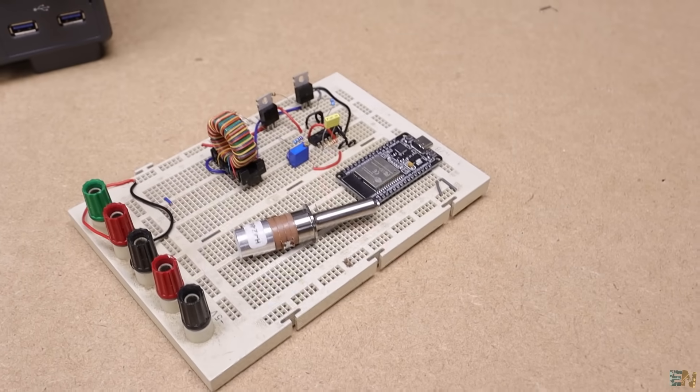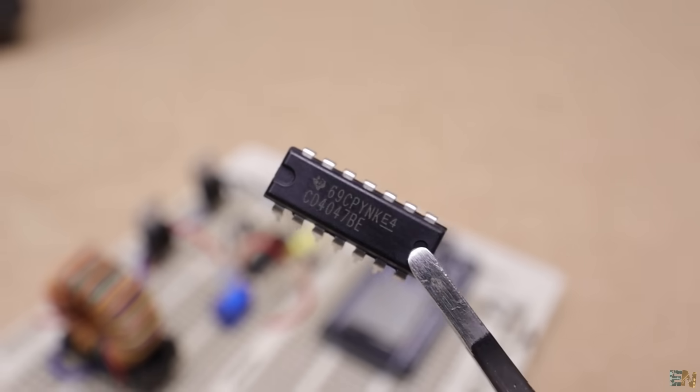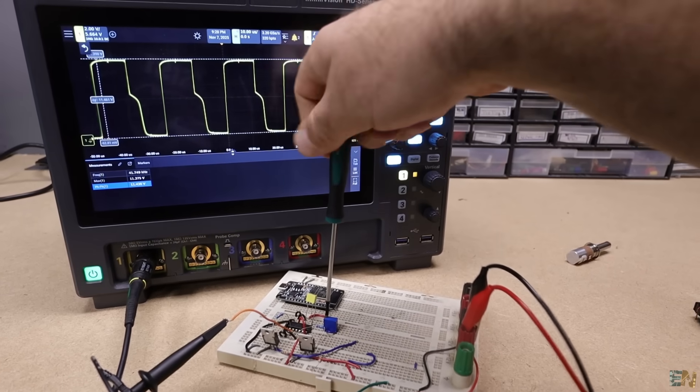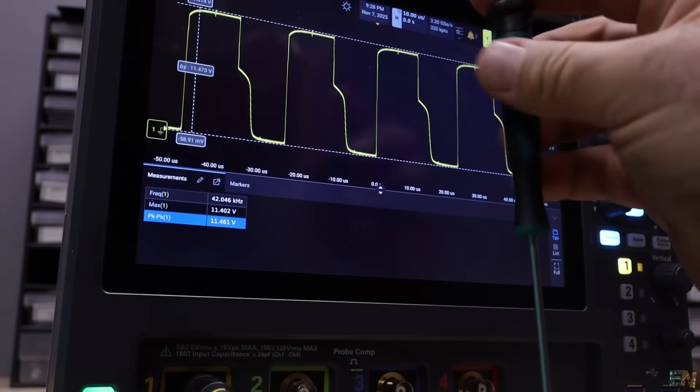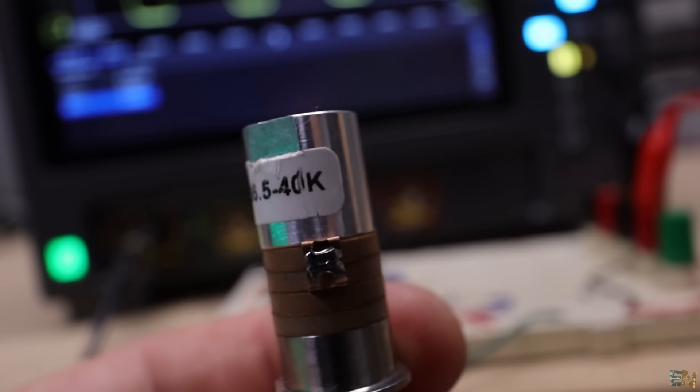But anyway, I've made a multivibrator circuit using the CD4047. Using this and a potentiometer we can adjust it to 40kHz as you can see on the scope. And that's the frequency where the piezo resonates and we have it marked right here.